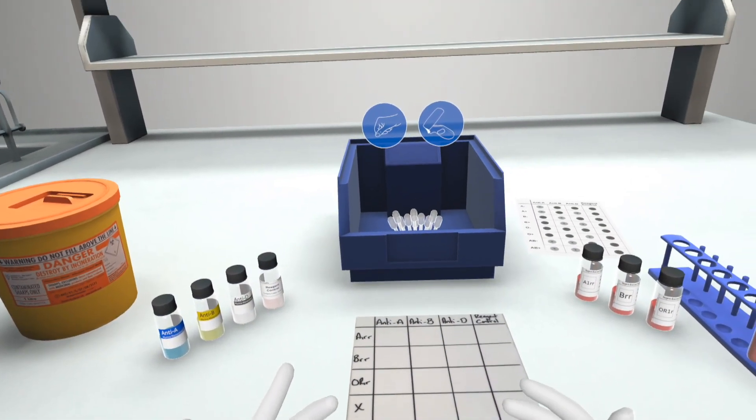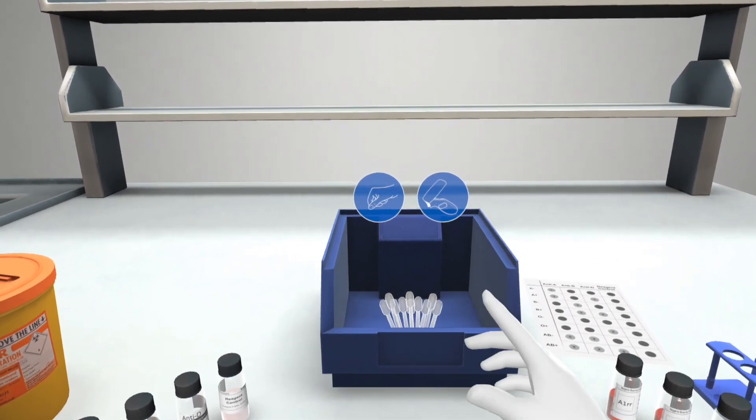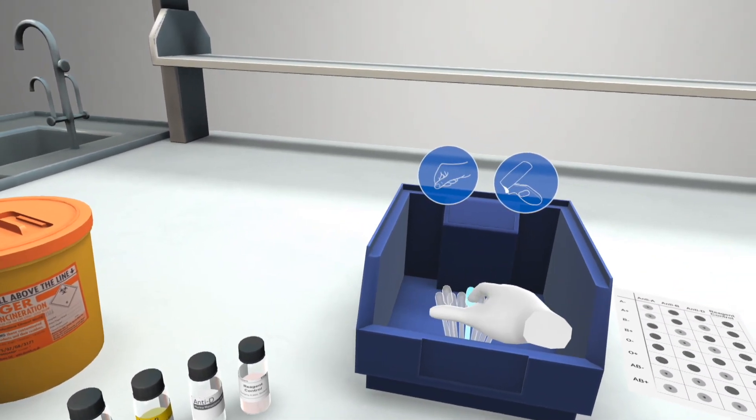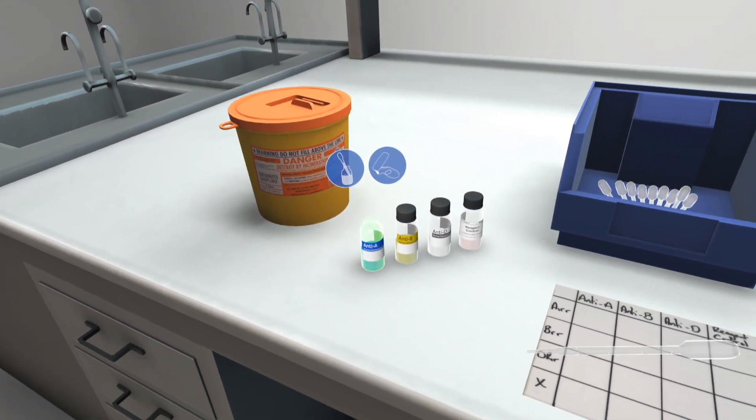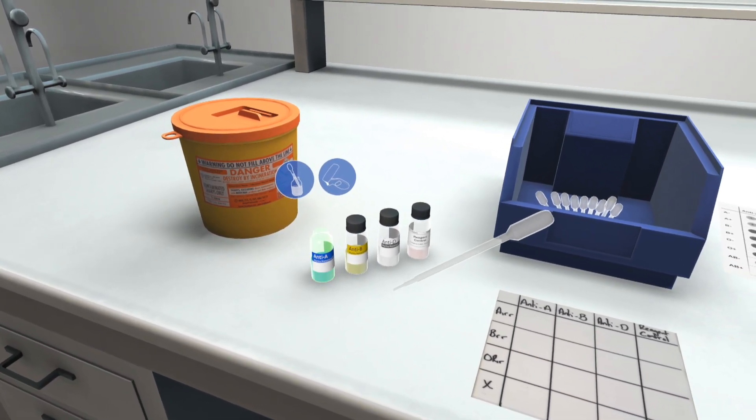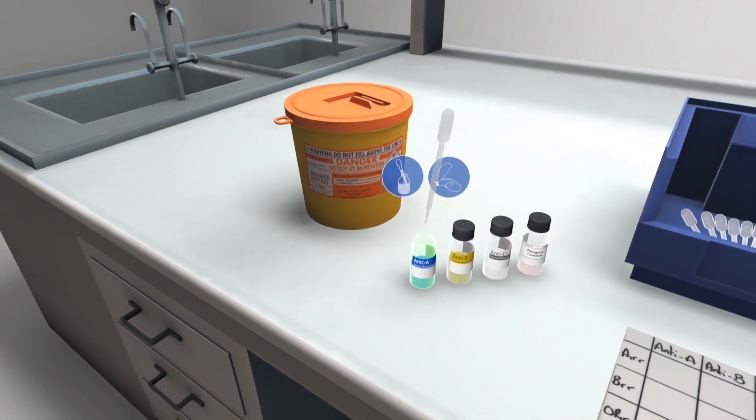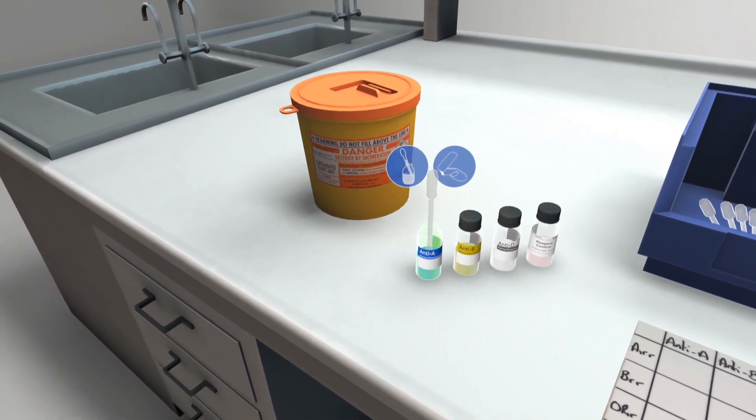Take a pipette from the pipette dispenser by hovering over it and pressing the trigger. Now grab a sample from the Anti-A bottle. Move the pipette over it, hold the trigger, submerge the pipette, then release the trigger in the solution. Try it.